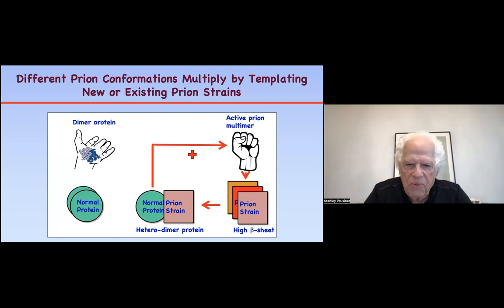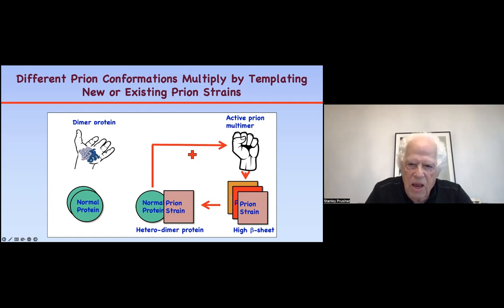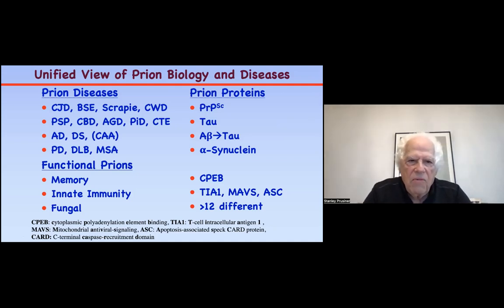Let me summarize where we are. We start with a normal protein, and because of a mutation or simply over time, the protein misfolds. More and more of the protein becomes misfolded and forms a clump. More is made, giving rise to different strains that can be propagated, and eventually the accumulation causes the disease and kills the patient.